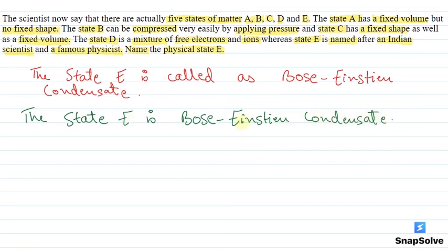And I'll give you an example of this. Its example is superconductors which you will study later, what superconductors are, which are used in modern science. So the state E which the question asks about is Bose-Einstein condensate and that was the explanation for this question. Thank you.